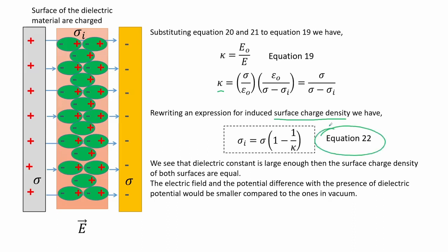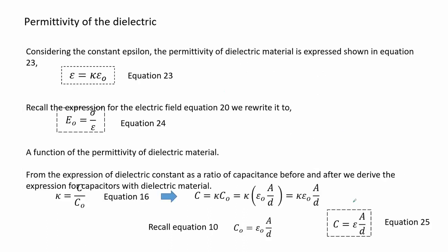If the dielectric constant is large enough, the surface charge density of both surfaces are equal. The electric field and potential difference with dielectric present would be smaller compared to those in vacuum. Considering the permittivity of the dielectric material epsilon, expressed in equation 23, and recalling the electric field equation 20 rewritten as equation 24 as a function of permittivity, we derive the expression for capacitance with dielectric material. After manipulating the equation, we get an expression for capacitance for capacitors with dielectric materials.